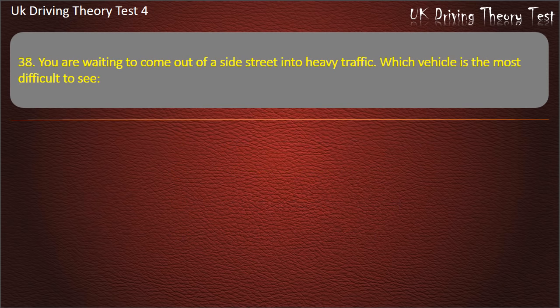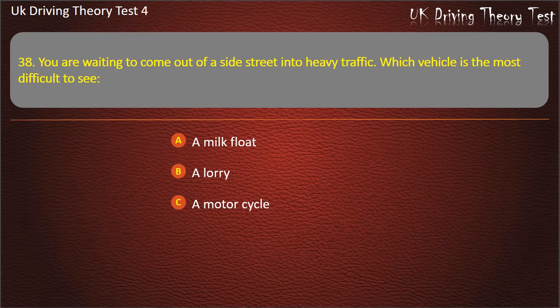Question 38. You are waiting to come out of a side street into heavy traffic. Which vehicle is the most difficult to see? A milk float; a lorry; a motorcycle; or a tractor. Answer: A motorcycle.